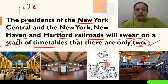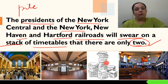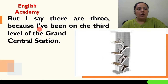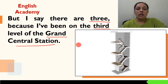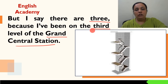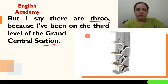But I say there are three, because I've been on the third level of the Grand Central Station. Narrator kehte hain ki main kahoon ga ki teen levels hain, teen floors hain, kyunki woh third level par bhi gaye hue hain. Is image mein dekh sakte hain — ground floor, first floor, second level, aur third level. Toh humare narrator ka yahi maanna hai ki Grand Central Railway Station ka third level bhi exist karta hai.